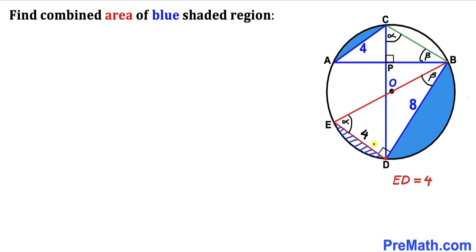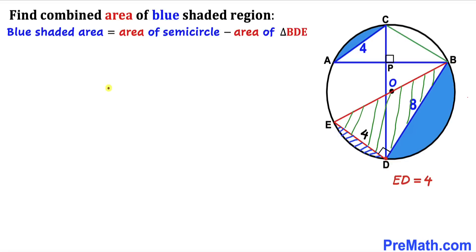We are going to calculate the area of this blue shaded region. The blue shaded area equals the area of the semicircle minus the area of right triangle BDE. Focusing on triangle BDE, since it is a right triangle we use the Pythagorean theorem: A² + B² = C², where C is the hypotenuse, A and B are the two legs.